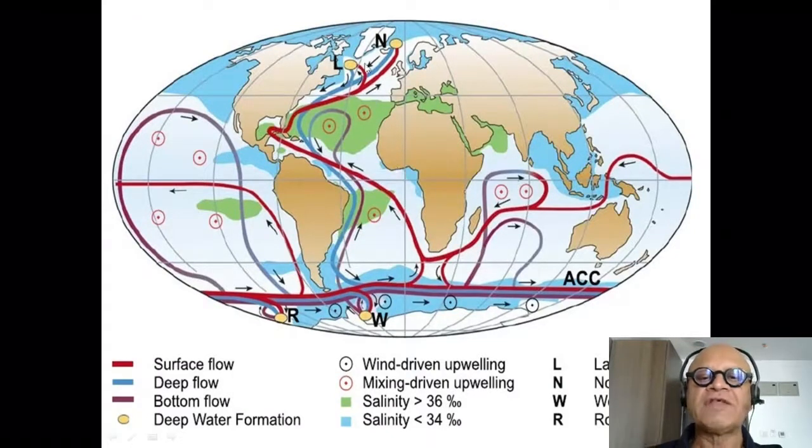It is a kind of a cartoon that has evolved over time after Wally Broker first proposed. Arnold Gordon, in fact, also had similar ideas before, saying that there is a global thermohaline circulation, global conveyor belt that Wally named, with sinking in a few spots.